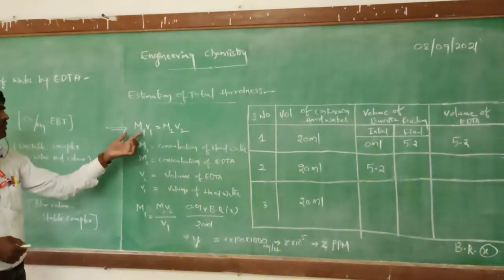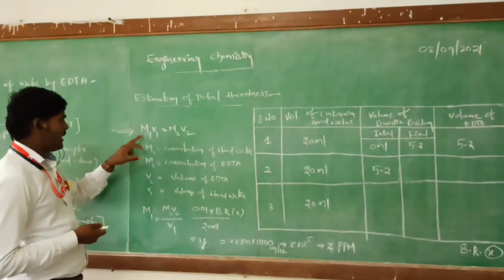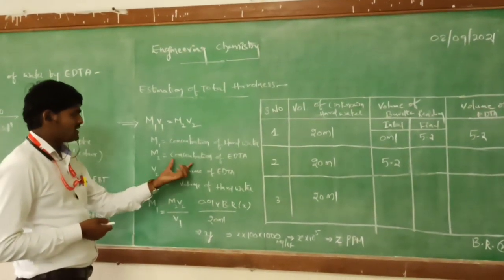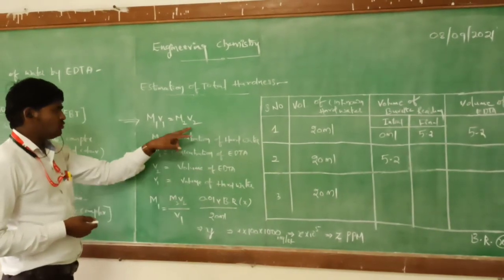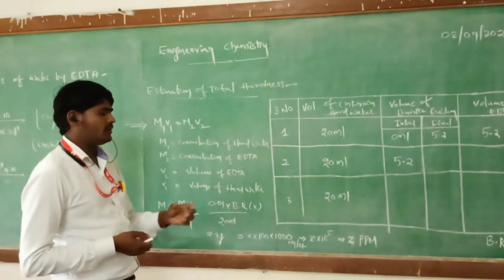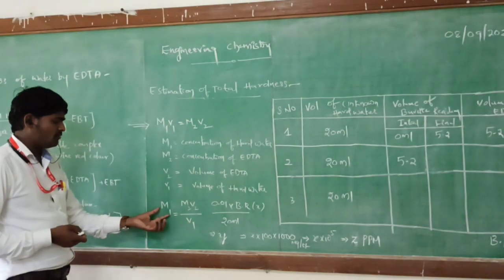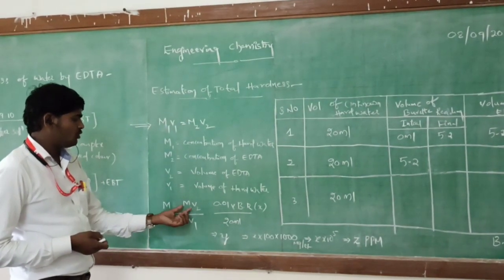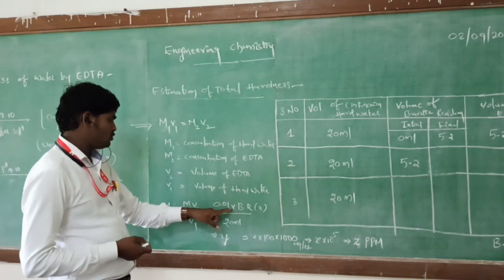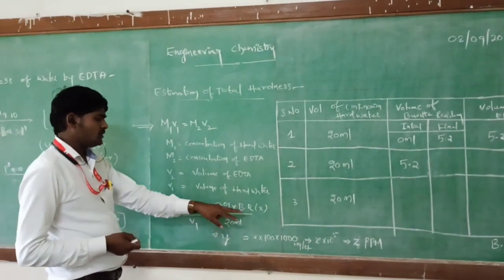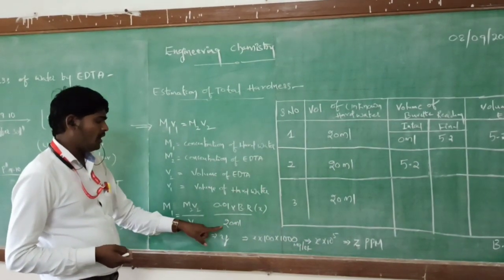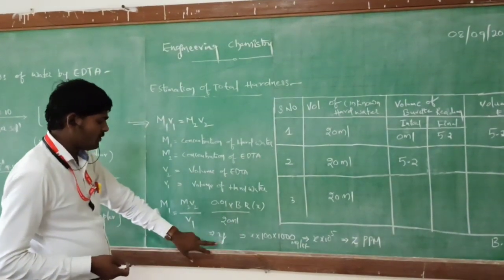The formula is M1V1 = M2V2. Here M1 is the concentration of hard water, M2 is the concentration of EDTA, V2 is the volume of EDTA, and V1 is the volume of hard water. So M1 = M2 × V2 / V1. Here M2, the concentration of EDTA, is 0.01 M; V2 is the average burette reading (x value); and V1, the volume of hard water, is 20 ml. Substitute the values to get the y value.